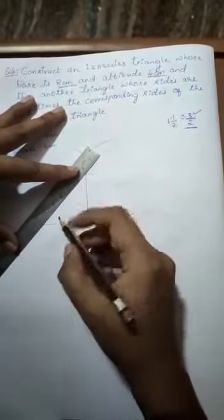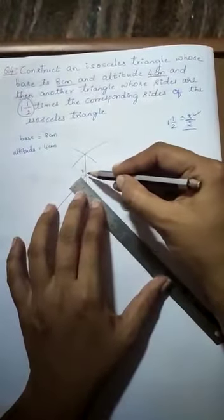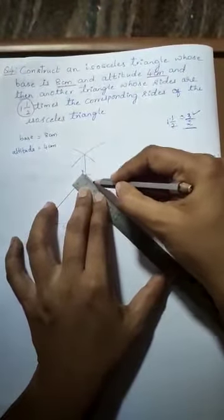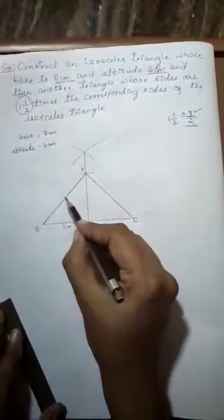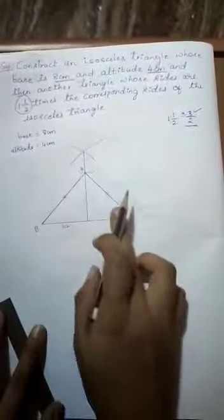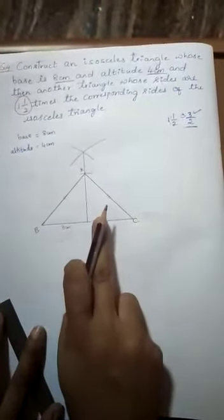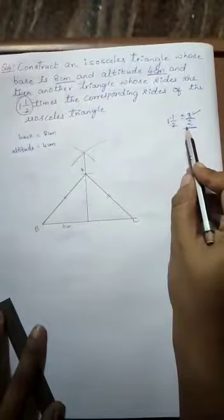So join AB and AC. The thing you got here, these two sides are equal. So this is isosceles triangle. For this triangle we have to construct another triangle using the ratio.